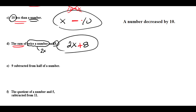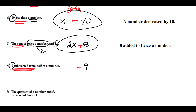Another English phrase for the same thing: '8 added to twice a number.' Now, '9 subtracted from half a number': 'subtracted from' means we're subtracting, and 9 is what is subtracted — it's subtracted from half of a number. 'Half of a number' means one-half times x. So the expression is (1/2)x − 9.